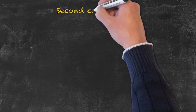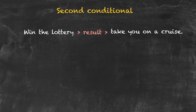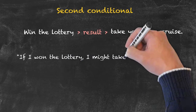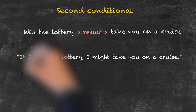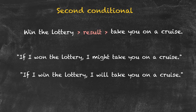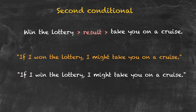Let's have a look at the next conditional — the second conditional — very similar in many ways to the first conditional as far as usage goes. Taking the same situation: the result of winning the lottery — take you on a cruise — but with a little less confidence. The sentence: 'if I won the lottery, I might take you on a cruise.' Comparing that with the first conditional: 'if I win the lottery, I will take you on a cruise.' A useful way to remember these patterns is by taking one situation and putting it in the pattern of each conditional. The second conditional indicates a reduced likelihood.